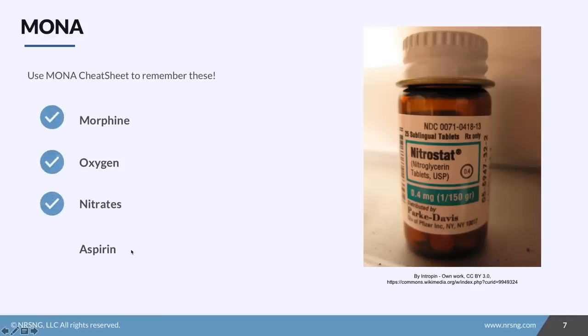What are our interventions for a patient with an inferior MI? In the angina lesson, we talked about MONA: morphine, oxygen, nitrates, and aspirin. You can also grab the cheat sheet to have with you in clinical. Morphine is for pain and decreased workload, oxygen for oxygenation, nitrates for vasodilation, and aspirin for antiplatelet action.